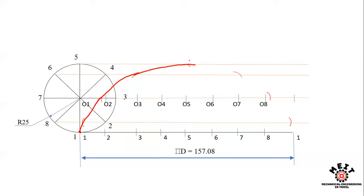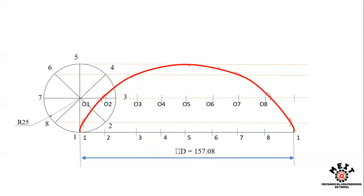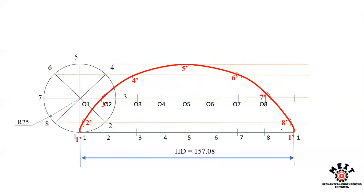Through all the obtained points, draw a smooth continuous curve — this is the cycloid. The curve should be smooth and neat, not made up of line segments. Name the points as 1'', 2'', 3'', 4'', 5'', 6'', 7'', 8''. You can use single or double dash notation. This smooth curve is your cycloid.